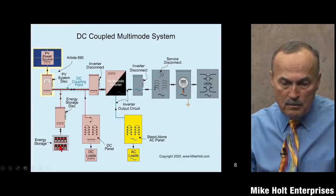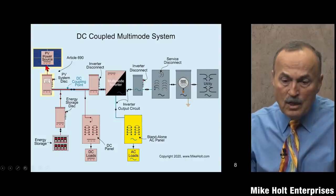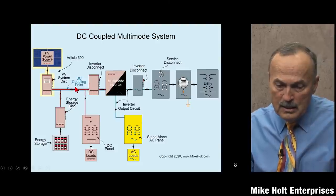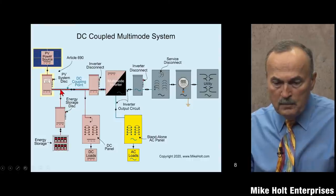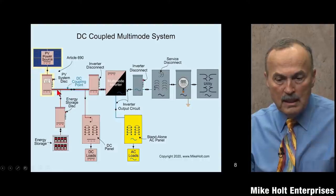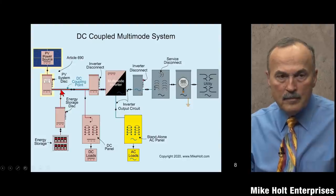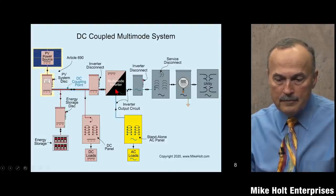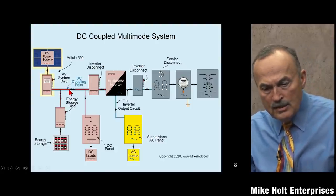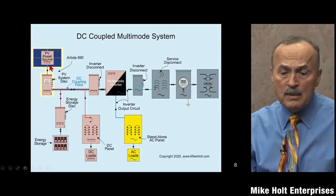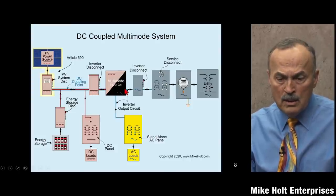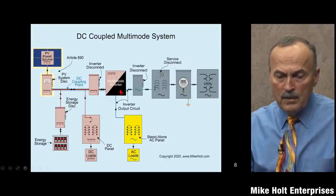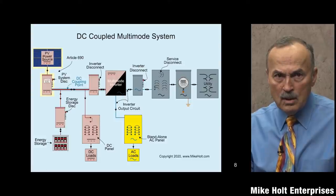There are times when power is needed from the battery, so electrons can go back the other direction. They can't go back up to the power source since it only goes one direction, so they move over to the point of DC coupling - think of it as a DC bus. You're supplying power to a DC bus and the inverter operates off that bus. It has two sources: solar and energy storage.